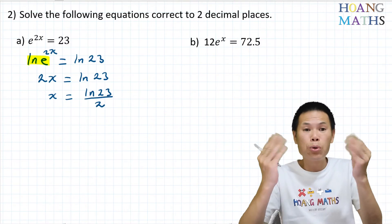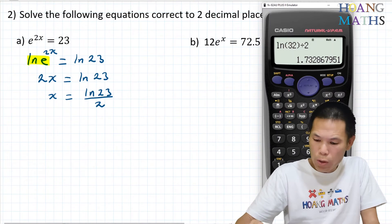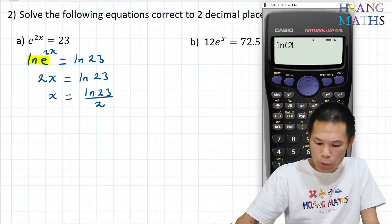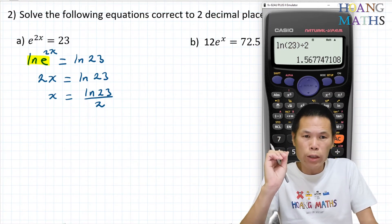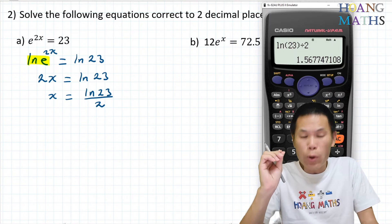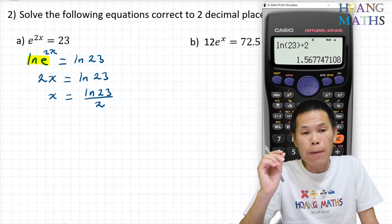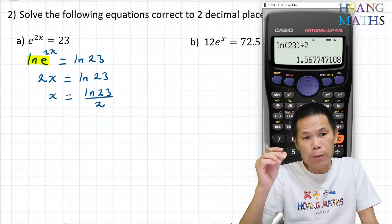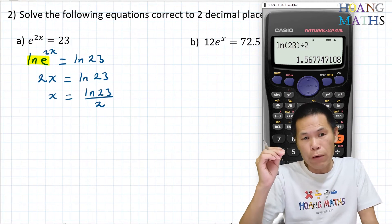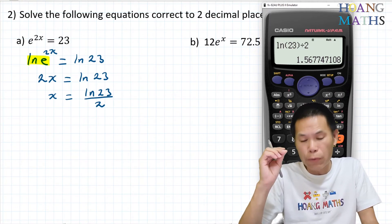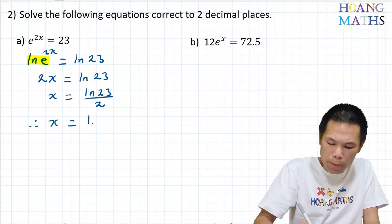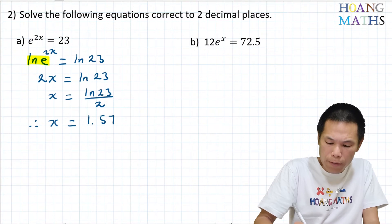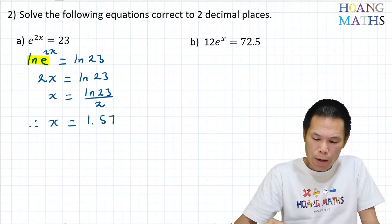I put that on the calculator: ln(23) divided by 2. Correct to two decimal places: 1.57 — the number after 6 is 7, more than 5, so we add 1 to 6, giving 57. Therefore x equals 1.57.